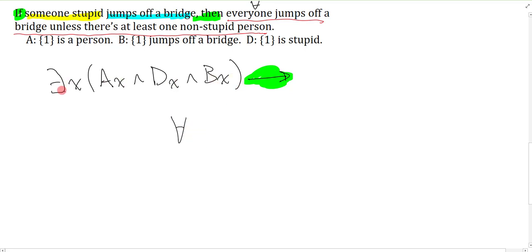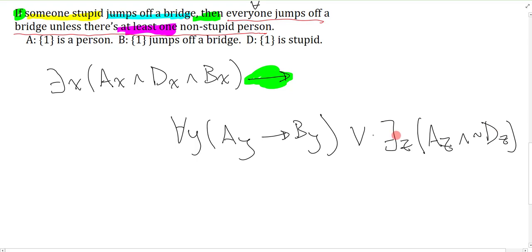You could use X because X is available because notice I closed the scope here, but I'll just switch to Y. Then everyone, so anything that is a person jumps off a bridge has the property that they jump off a bridge. Now I can say unless there's at least one non-stupid person. At least one is just an existential. There is at least one non-stupid person is I'll change it to Z, something that is a person and not stupid. Unless is easiest symbolized with a disjunction, and this entire thing is the consequent.